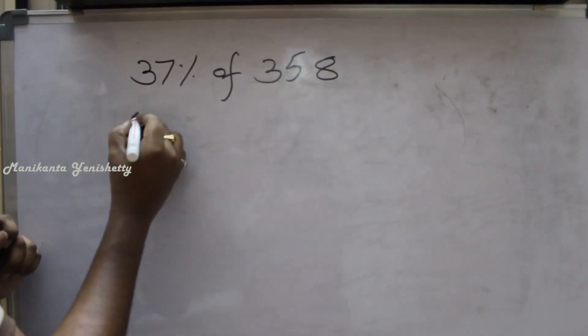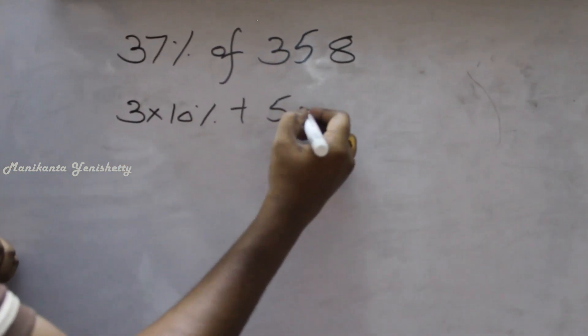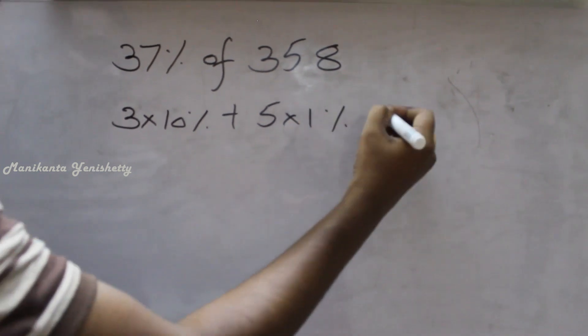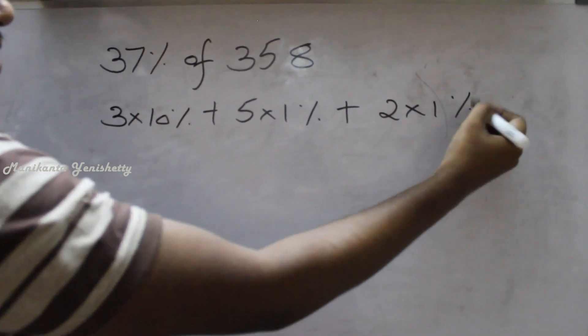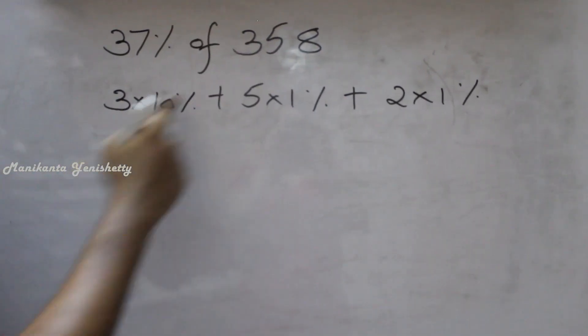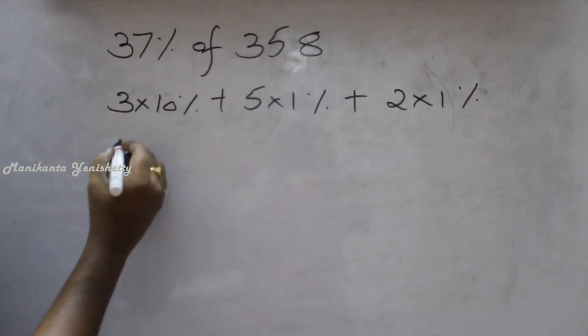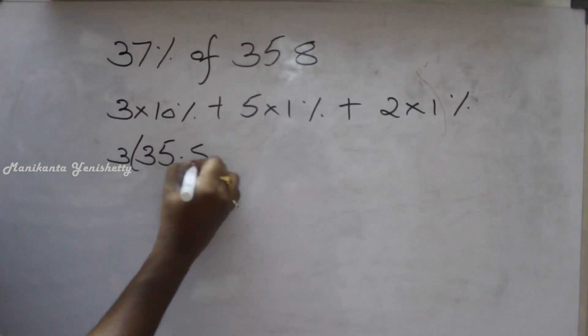How will you write 37 as? 3 into 10% plus 5 into 1%. So 35 plus 2 into 1%. 10% is nothing but 35.8, so 3 into 35.8.